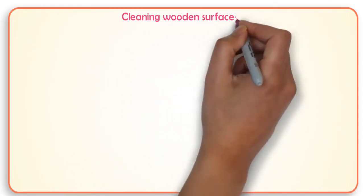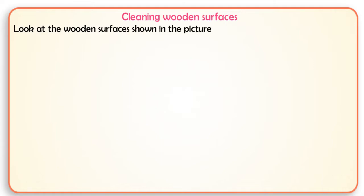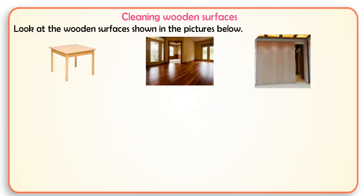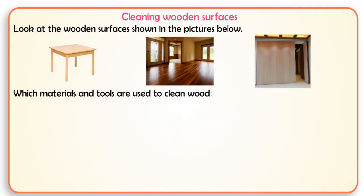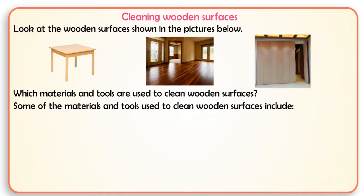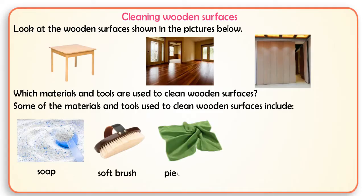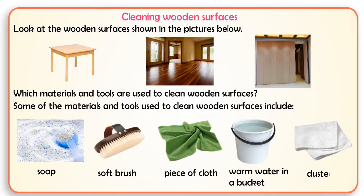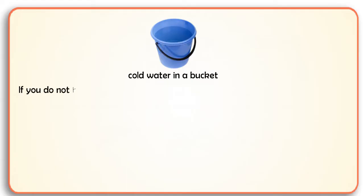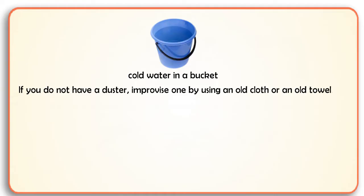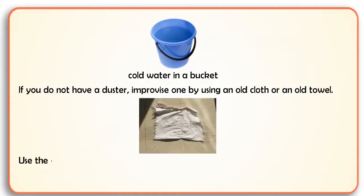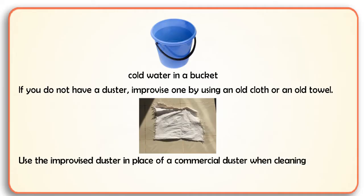Cleaning wooden surfaces. Look at the wooden surfaces shown in the pictures below. Some of the materials and tools used to clean wooden surfaces include soap, soft brush, piece of cloth, warm water in a bucket, duster, and cold water in a bucket. If you do not have a duster, improvise one by using an old cloth or an old towel. Use the improvised duster in place of a commercial duster when cleaning wooden surfaces.